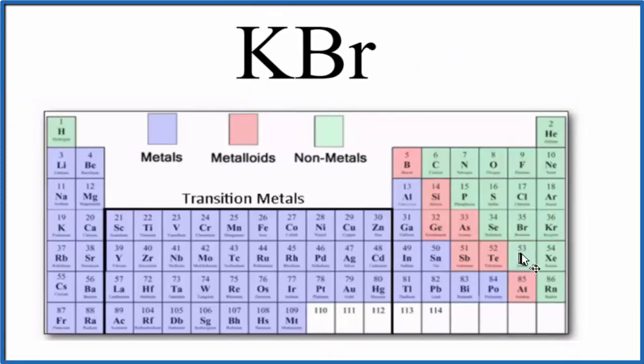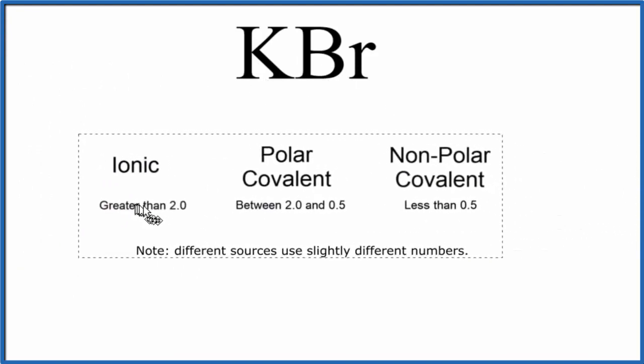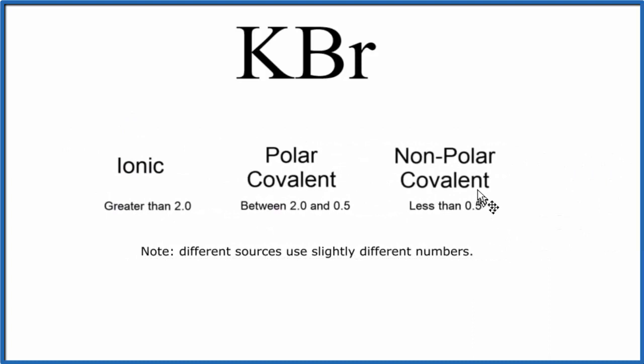The other way we can do this is look at the difference in electronegativity between the potassium and the bromine. So when we talk about ionic compounds and covalent compounds, if we have a difference in electronegativity between the potassium and the bromine that is greater than two, that means it's an ionic compound.